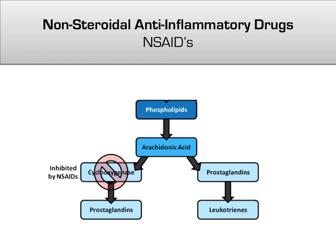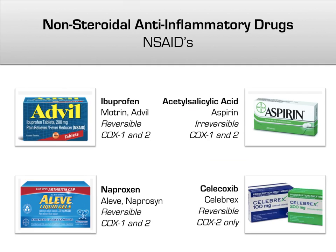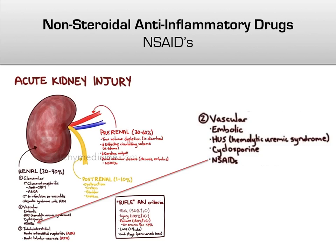There are two different COX enzymes, isoforms 1 and 2, and the drugs we'll study inhibit one or both of these. Here are the major NSAIDs you'll encounter on a common basis; they have many other functions in addition to pain relief. There is increasing evidence that NSAIDs cause injury to the kidney, especially when used for long periods of time. Make sure to check creatinines on a regular basis for patients taking these daily.